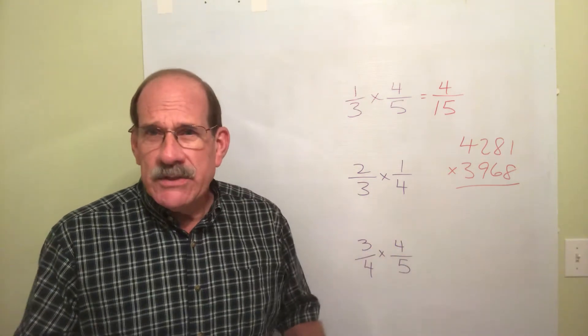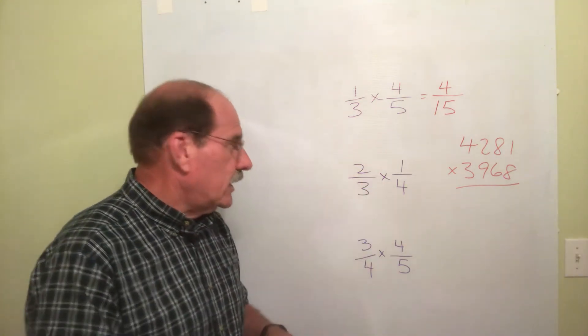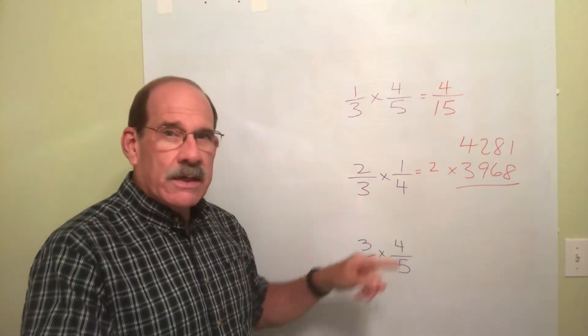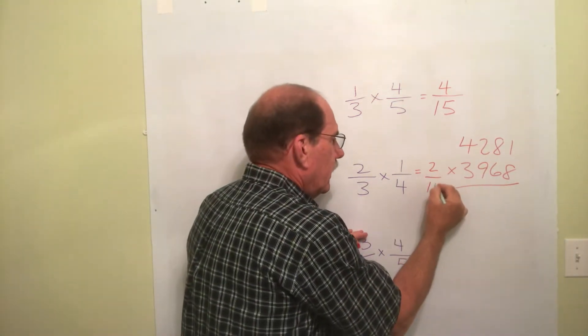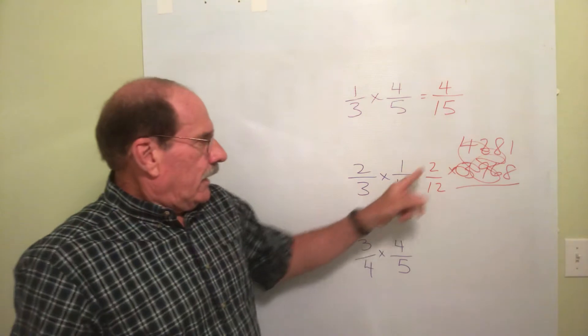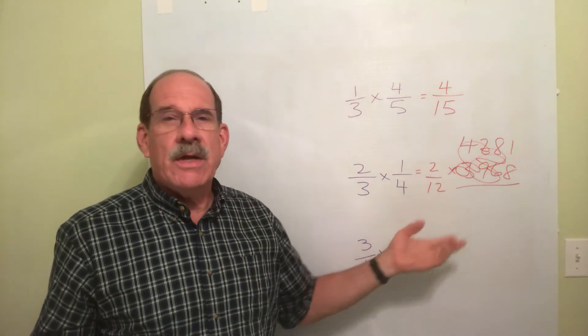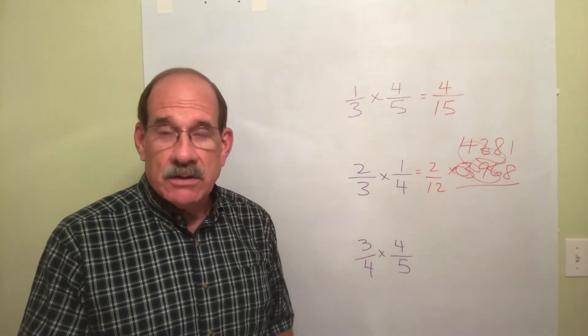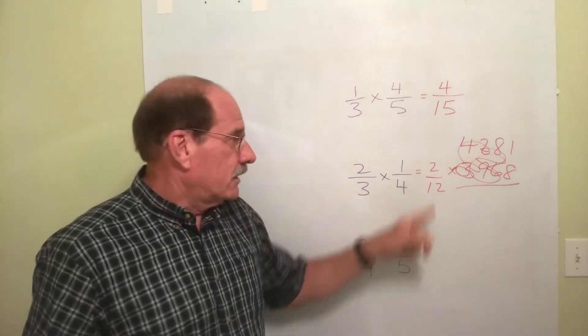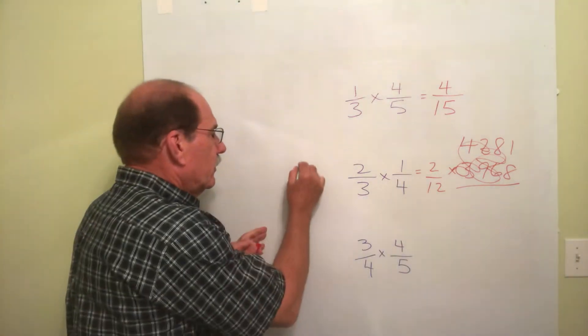I'm going to try to make this hard, but that won't be easy. 2/3 times 1/4, multiply the two numerators. 2 times 1 is 2. 3 times 4 is 12. Now, notice something. We have to do what? You don't leave it that way. You would reduce it to lowest terms. What can we divide 2 by, and 12 by, both? Well, 2. Divide 2 by 2, we get 1. Divide 12 by 2, we get 6. So, the final answer is 1/6.